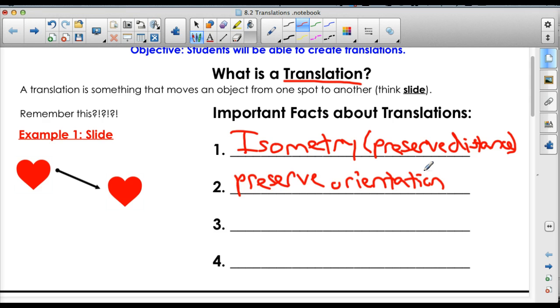Now, remember orientation is keeping the points in the same order. So normally the points are labeled. So if I go ABC going from left to right, it stays ABC going from left to right. The third important thing is that they have congruent image and pre-image.